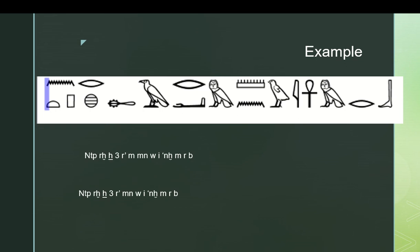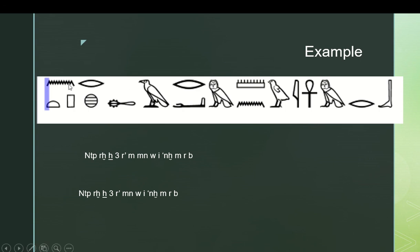I'm going to give you the opportunity to pause the video here and think about how you might record this if you were writing it down. Remember: top to bottom in an individual group, and follow the birds from their beaks to their tails. All right, so this is the answer. There are actually two possible answers because there's a deliberate bit of ambiguity regarding this M — whether it is a phonetic complement to MN or just standing on its own. Either interpretation is okay; it would be contextual. We also have one triliteral with nothing helping it out, and everything else is alphabetic.